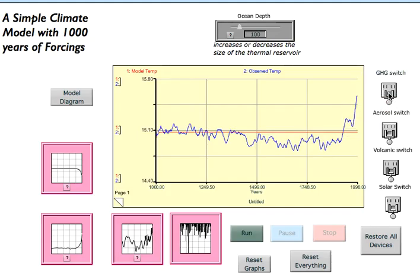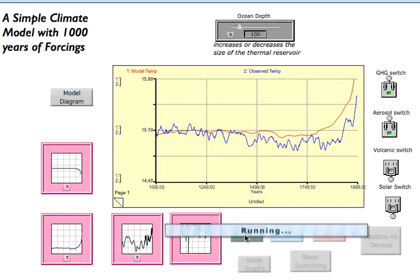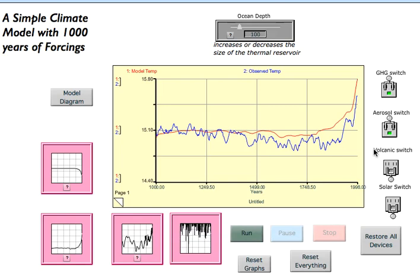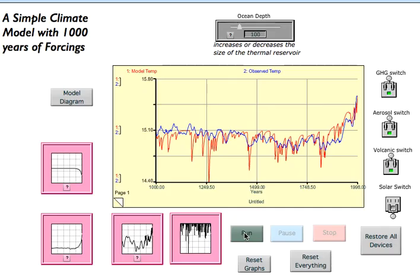We can turn these things on and see what they do. There's the greenhouse gas concentration. Here's the aerosol concentration combined with greenhouse gases. Now I'm going to combine the volcanic forcing, and finally, the solar forcing.